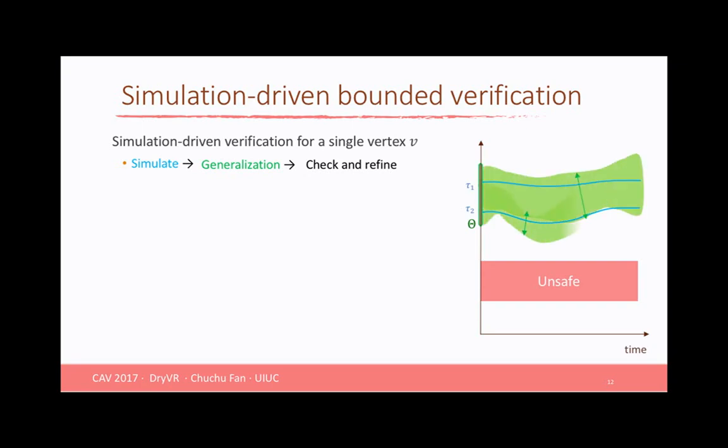we will have to do some refinement, that is to split the initial set theta to smaller sets and essentially do the similar thing for each of the smaller ones. Simulate, generalize, and check the safety of each one of them. So it's a pretty simple method. But the question is, how should we generalize this single simulation trajectory to get a tube that contains all the other trajectories starting from the initial set?